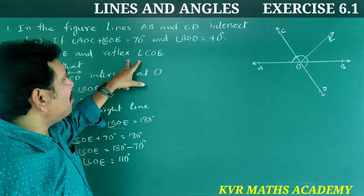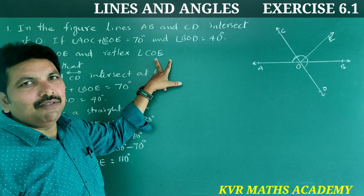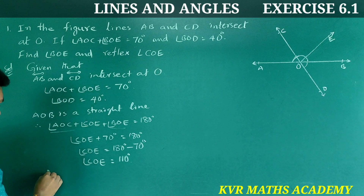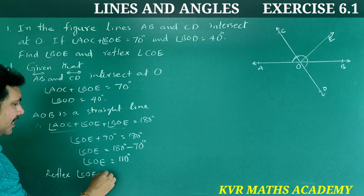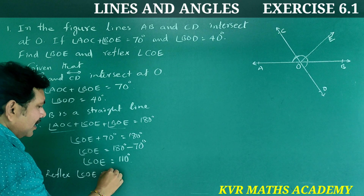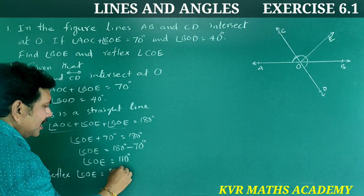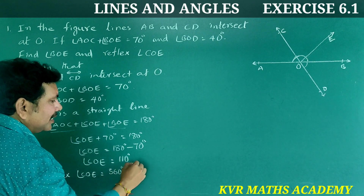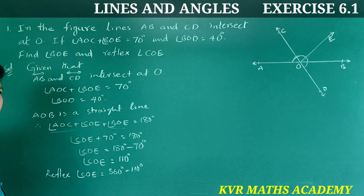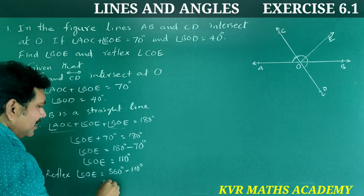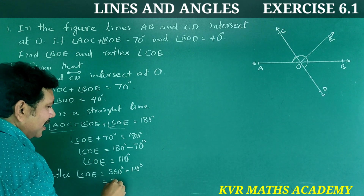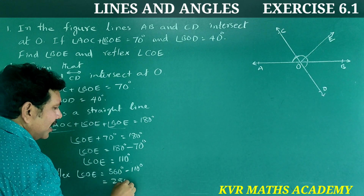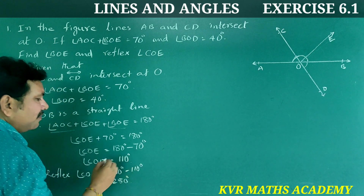But what we want is the reflex angle COE. Reflex angle COE equals 360 minus 110 degrees. That is equal to 360 minus 110, which is 250 degrees.